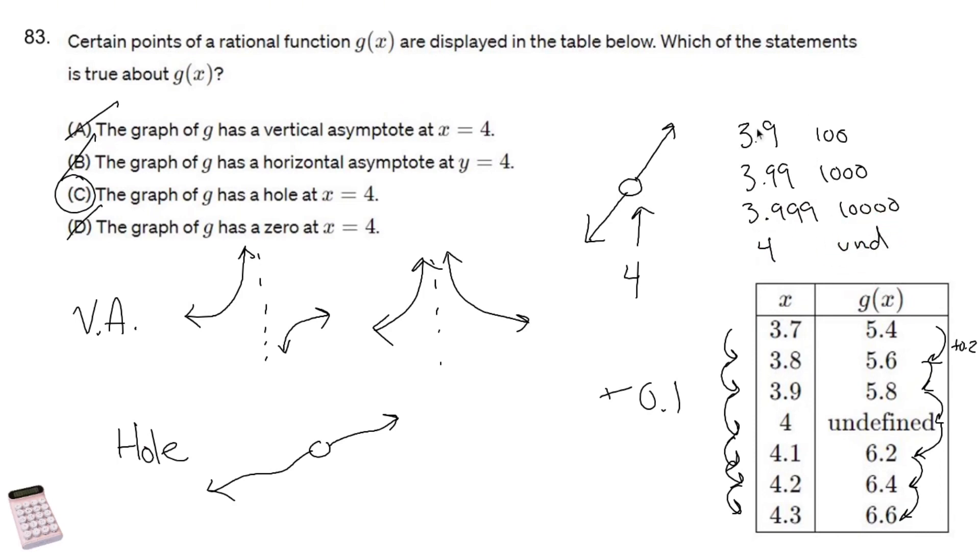So that's usually the vertical asymptote type problem. We didn't have that at all. This is a hole type problem.